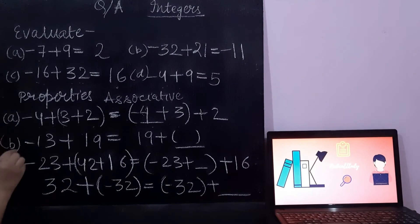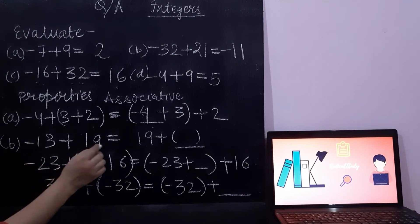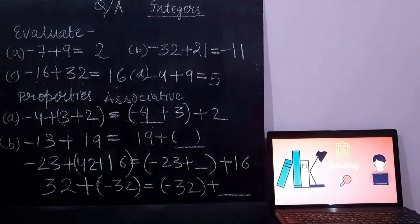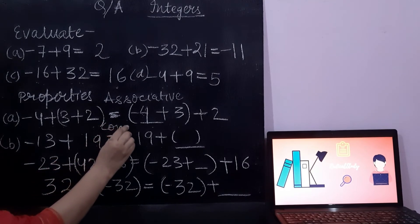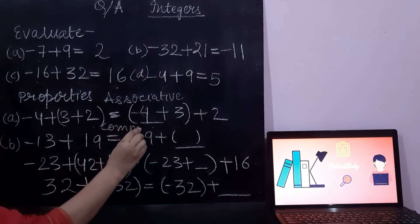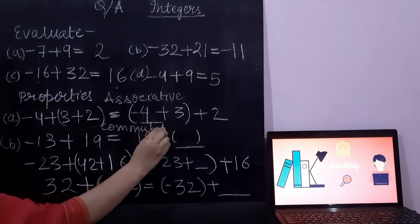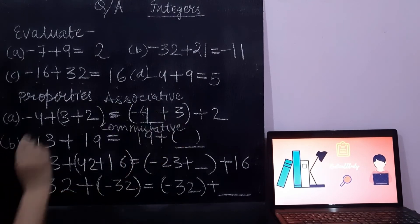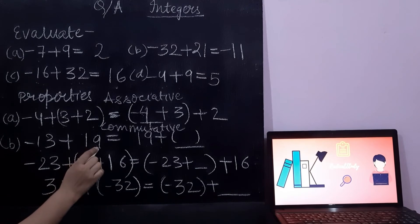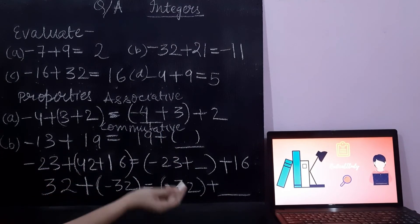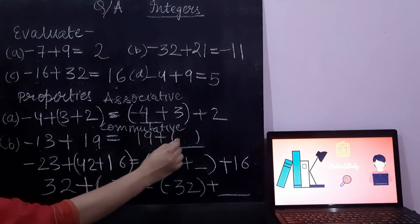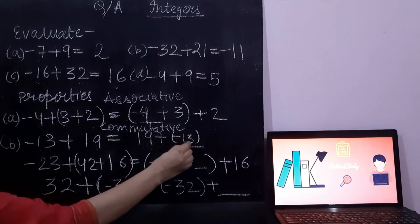Now option B is based on the commutative property of addition. Since A plus B equals B plus A, minus 13 plus 19 — minus 13 will come in the blank here.